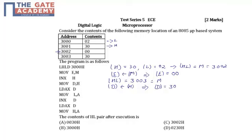Now LDAX D means we are loading the accumulator from the register pair DE. So A will get the contents of the memory address pointed to by register pair DE.